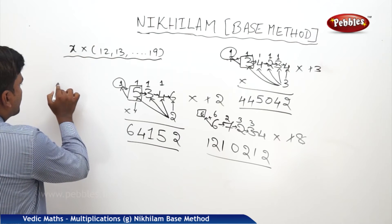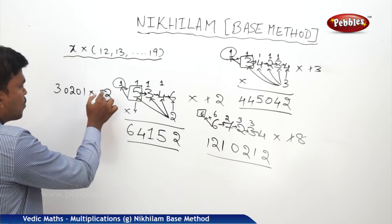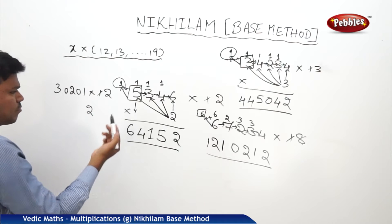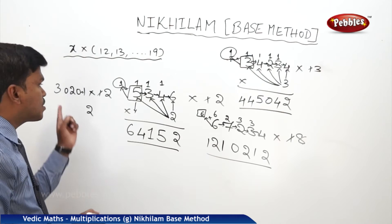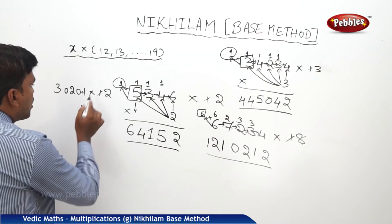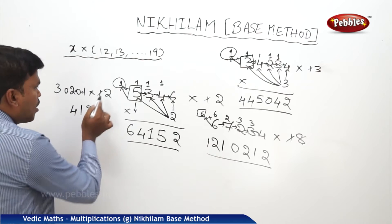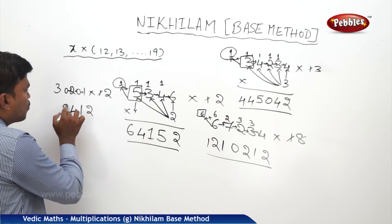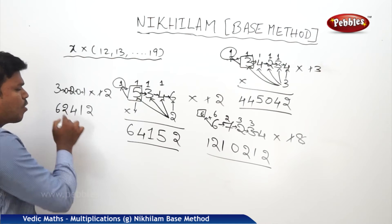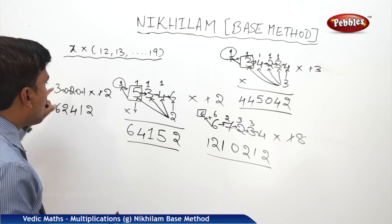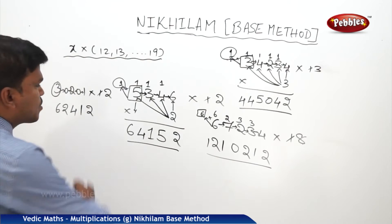One more example: 30201 into 12. Leave 1. 2 times 1 is 2, no carry. 2 times 0 is 0, plus right side digit 1 is 1. 2 times 2 is 4, plus right side digit 0 is 4. 2 times 0 is 0, plus right side digit 2 is 2 — just drop 2. 2 times 3 is 6, plus right side digit 0 is 6 — just drop 6.